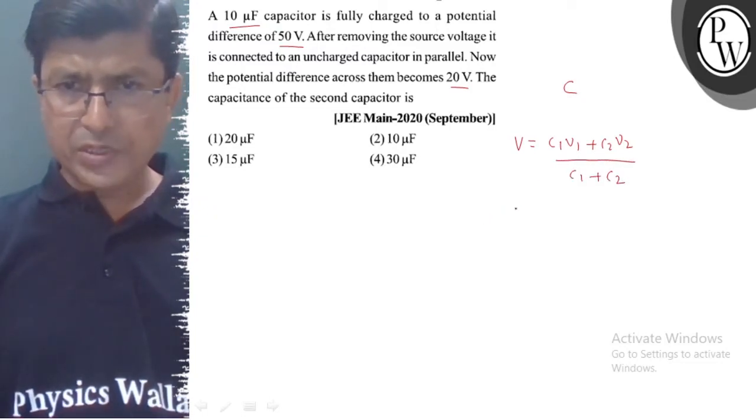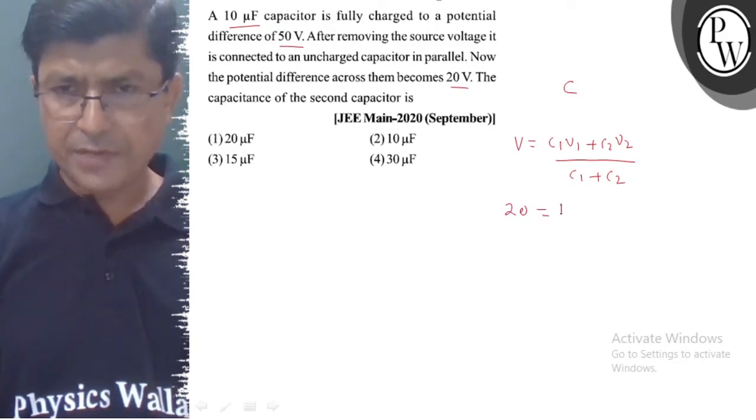The common potential V is 20V. C1 value is 10μF. V1 is given by 50.